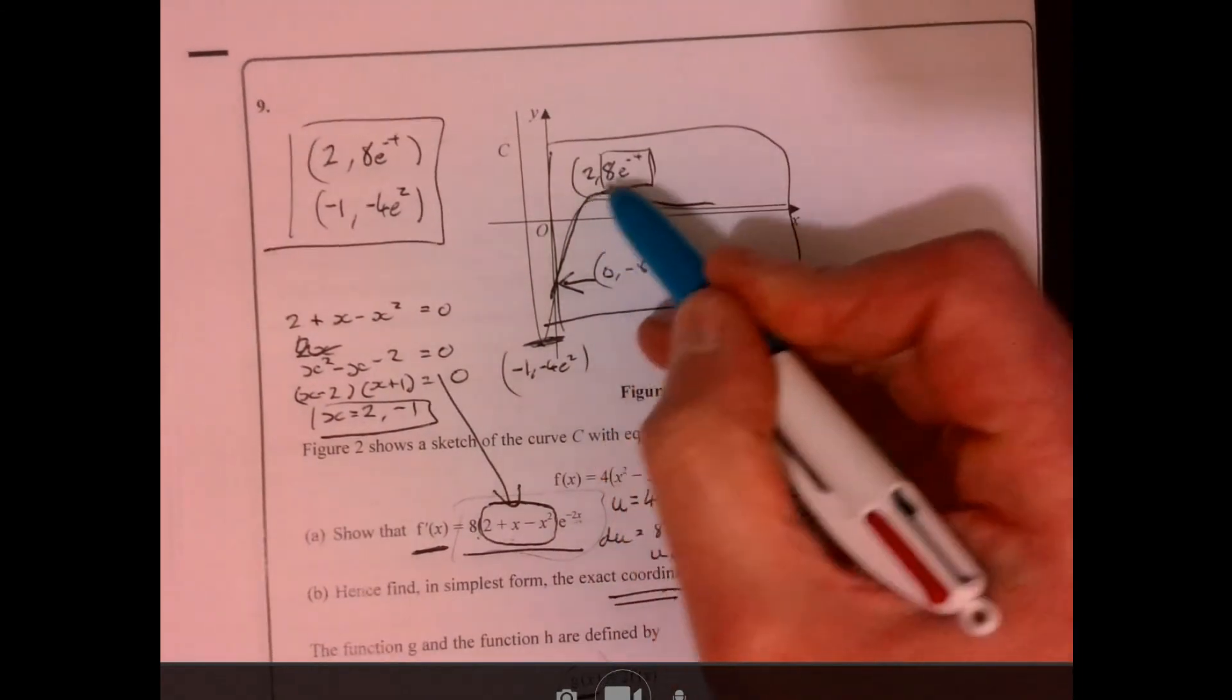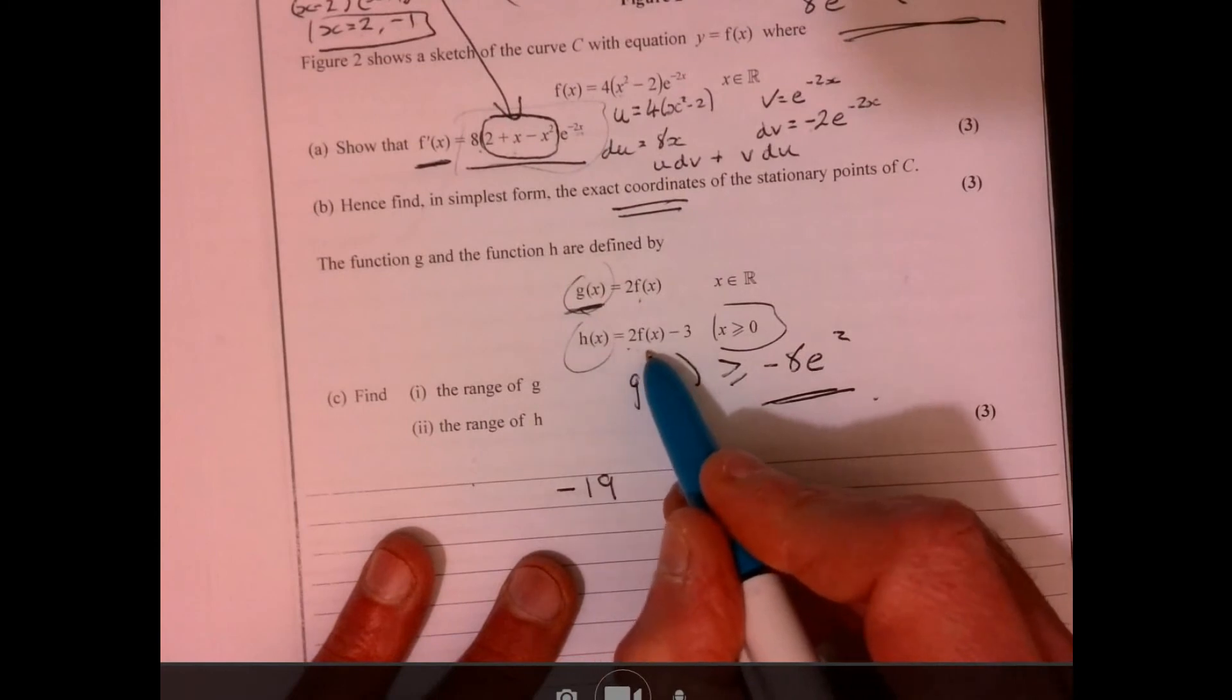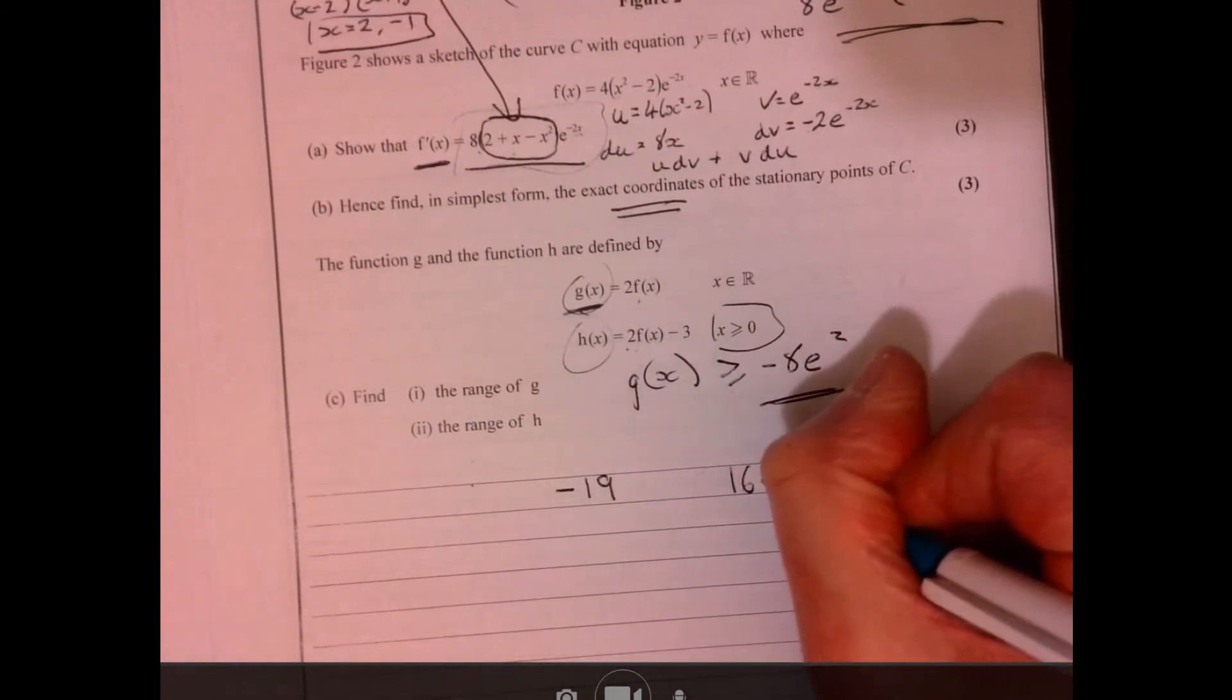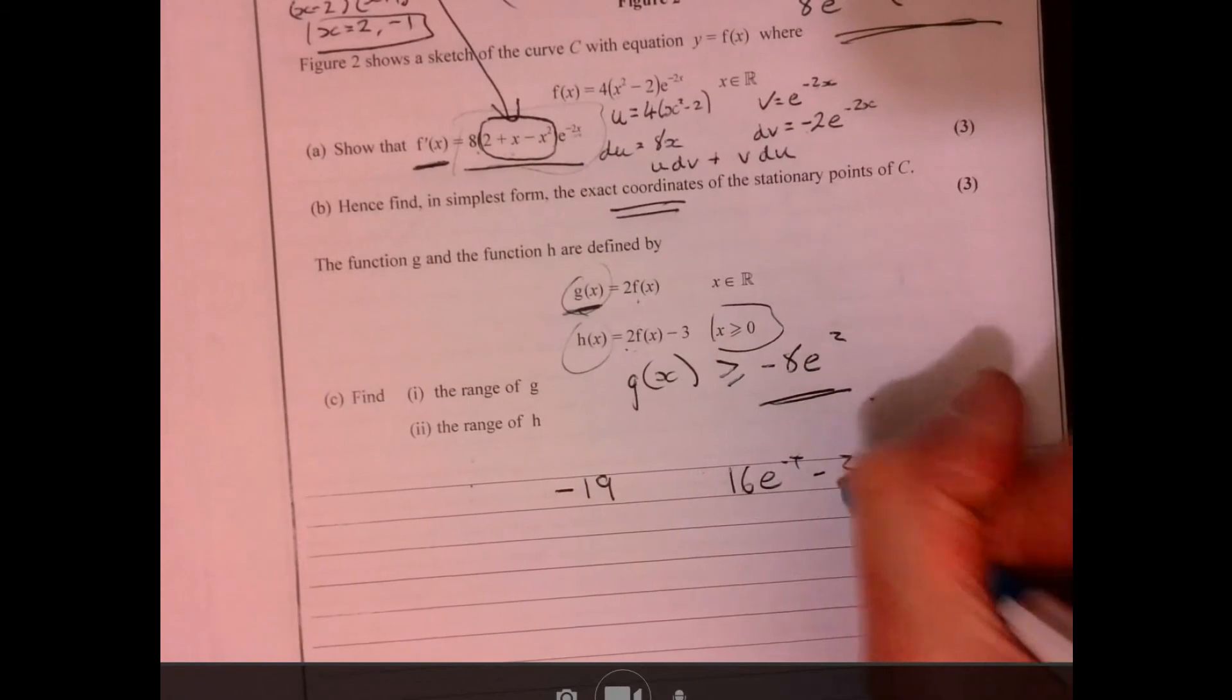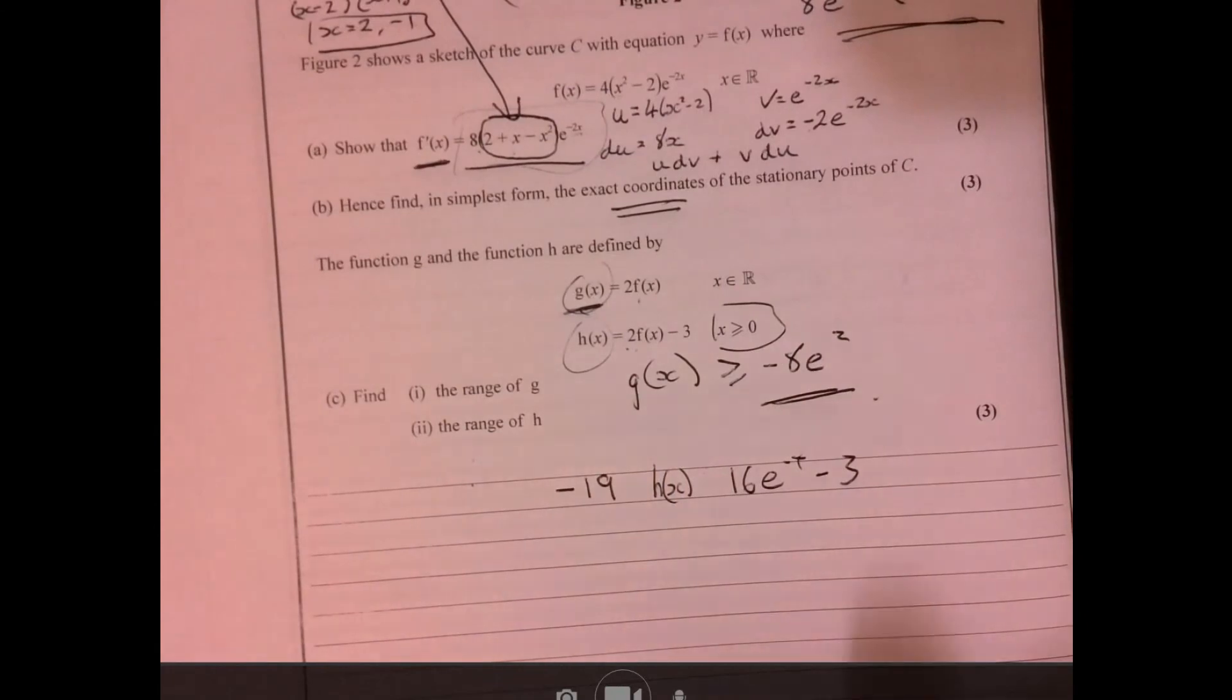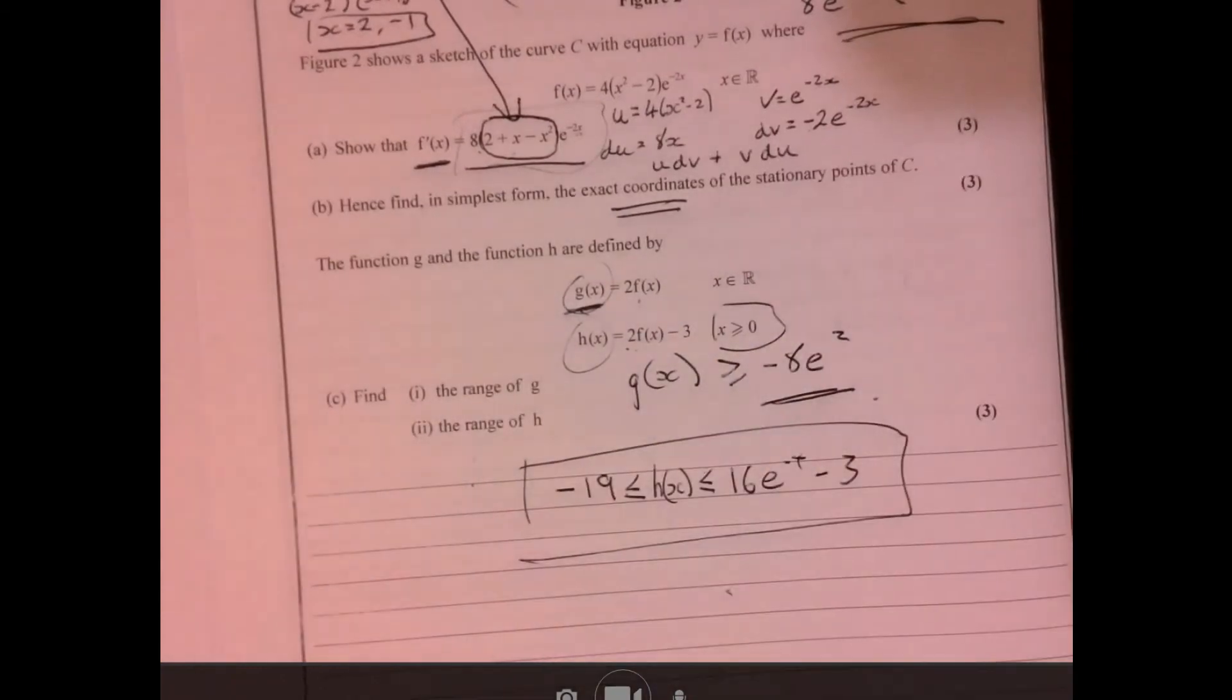So remember, it's multiplied by 2. Think about what I'm doing. Multiply it by 2, and then I'm taking away 3 from the answer. So if I multiply that by 2, it's simply going to be 16e to the minus 4. And then I need to take away 3 from that. And then all I need to do is just to write this inside it. So we know it's going to be less than or equal to that, and it's going to be more than or equal to that figure. There you are.